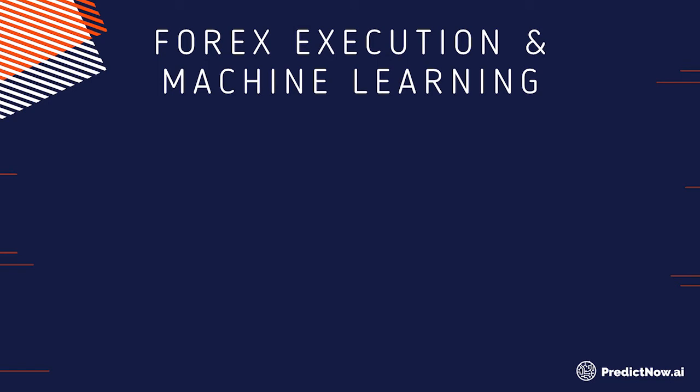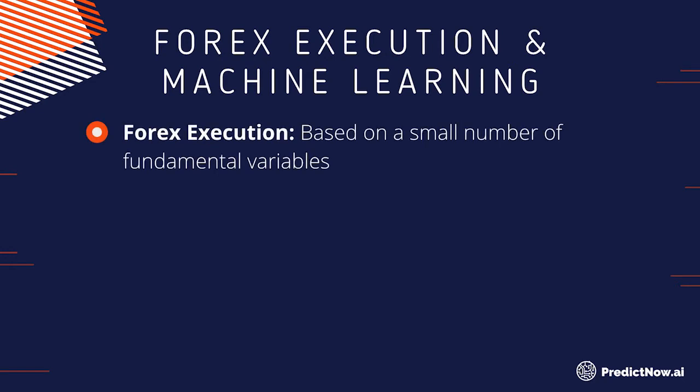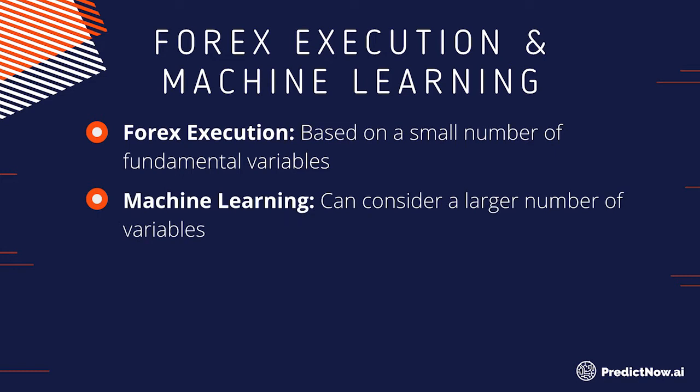In Forex trading, execution is often just based on price or a few fundamental variables. But in machine learning, you can consider many other variables — such as how the equity market moves, how gold and other precious metals move, and how order flow looks across multiple instruments. For example, if you're trading cable — the pound versus USD — your model may not account for how emerging market currencies or the Japanese yen are moving.